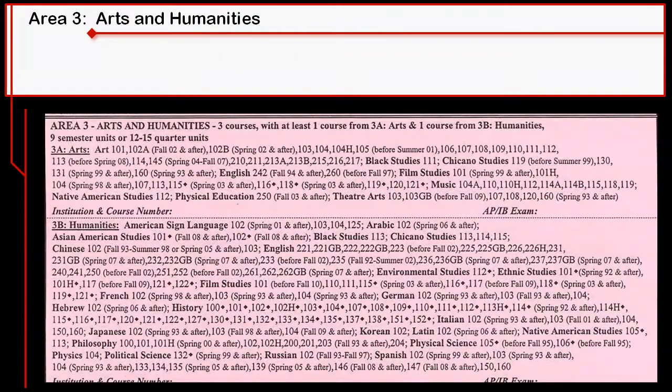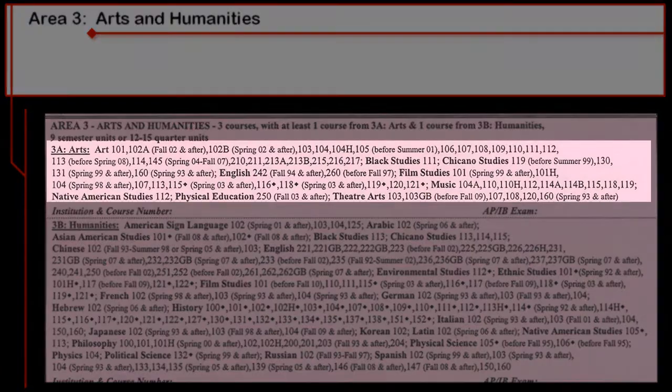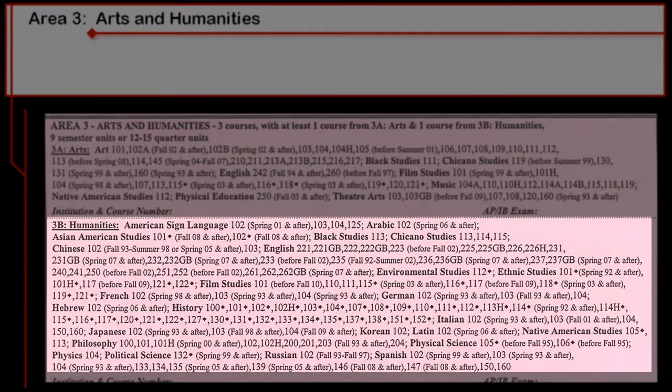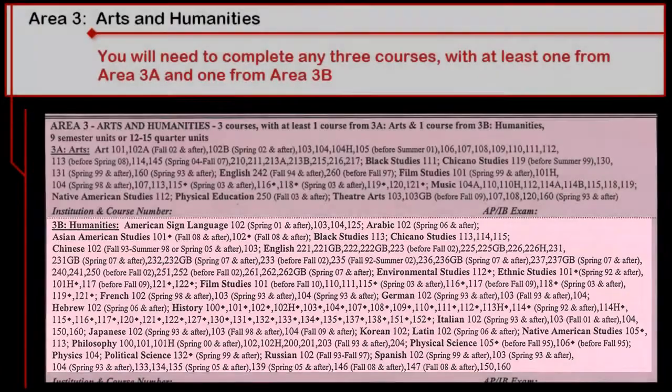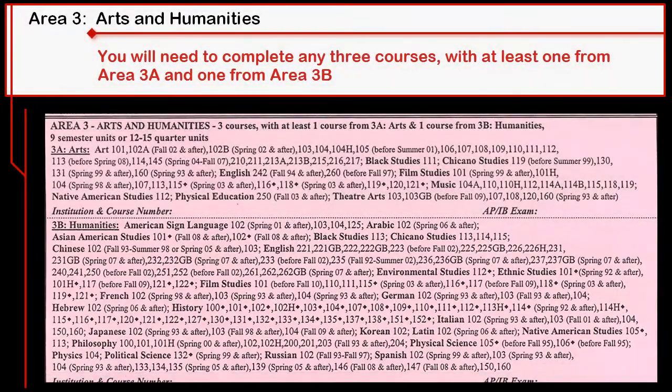Area 3 has two groups of courses, the Arts and the Humanities. You need to choose one course from each group, and depending on your interest, you get to choose another course from either of the Arts or the Humanities for a total of three courses.